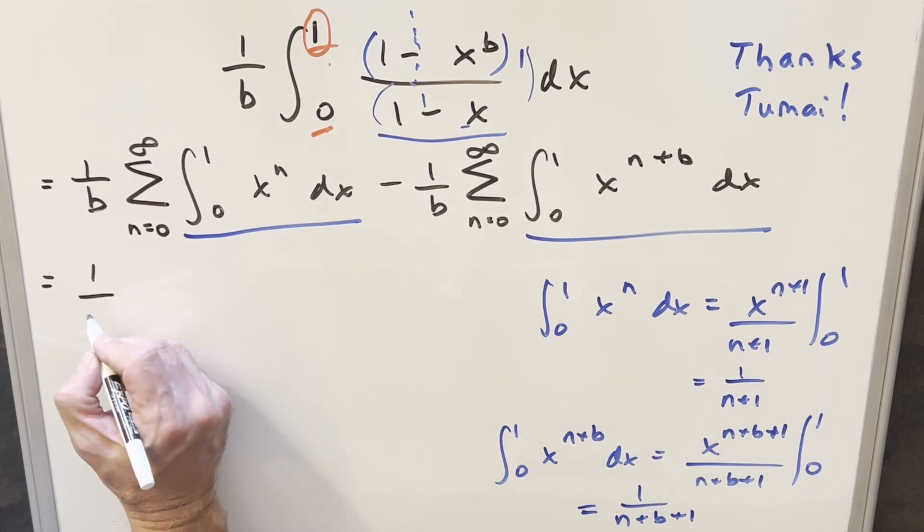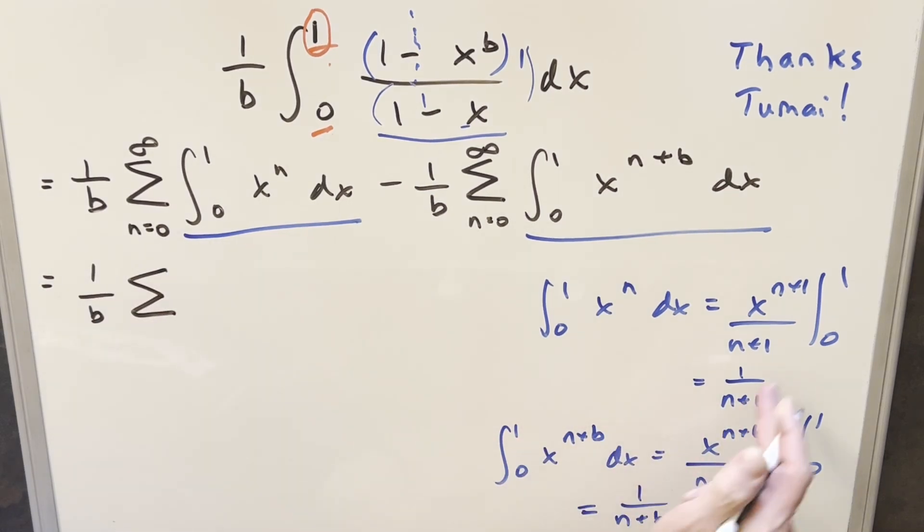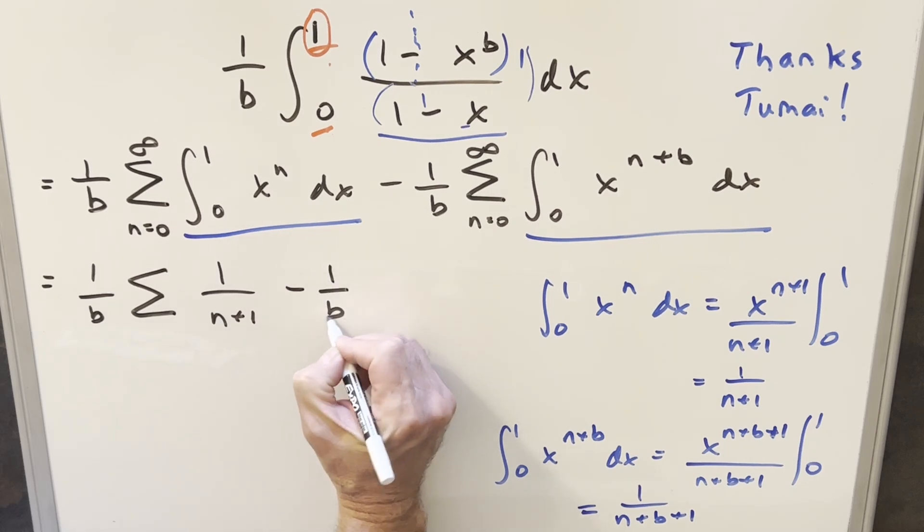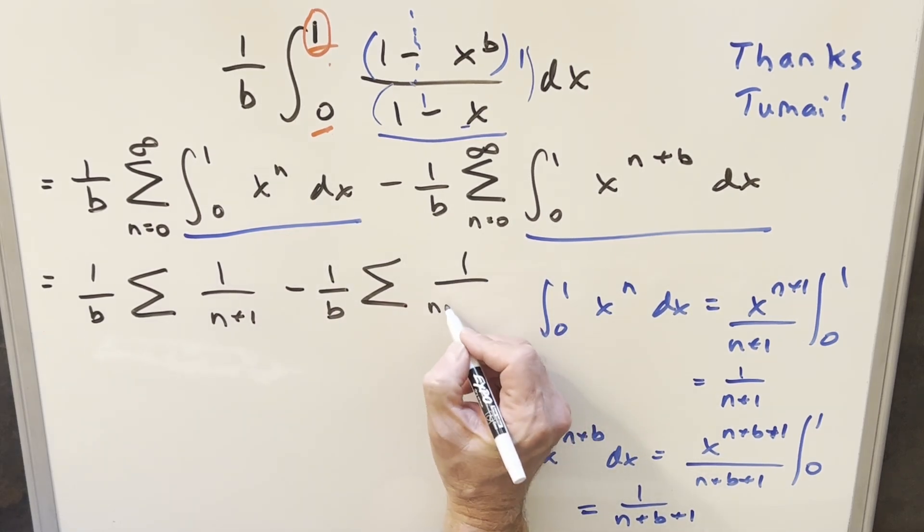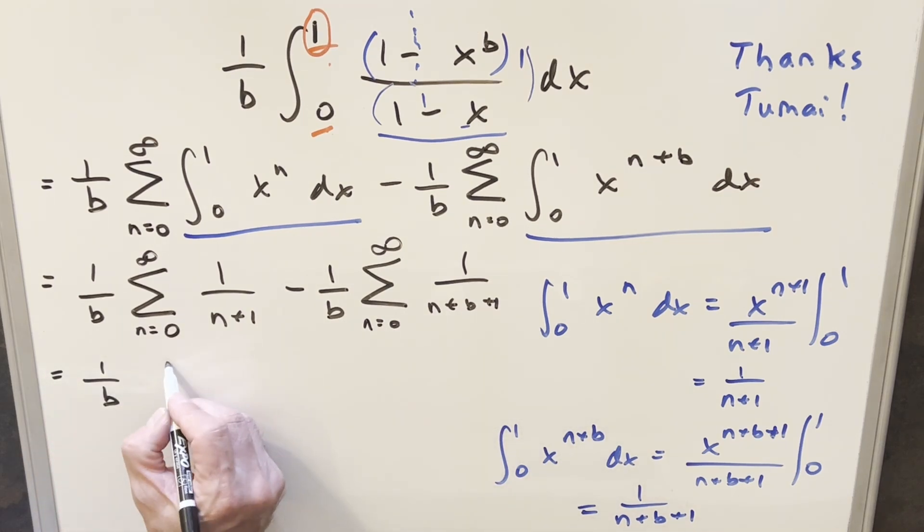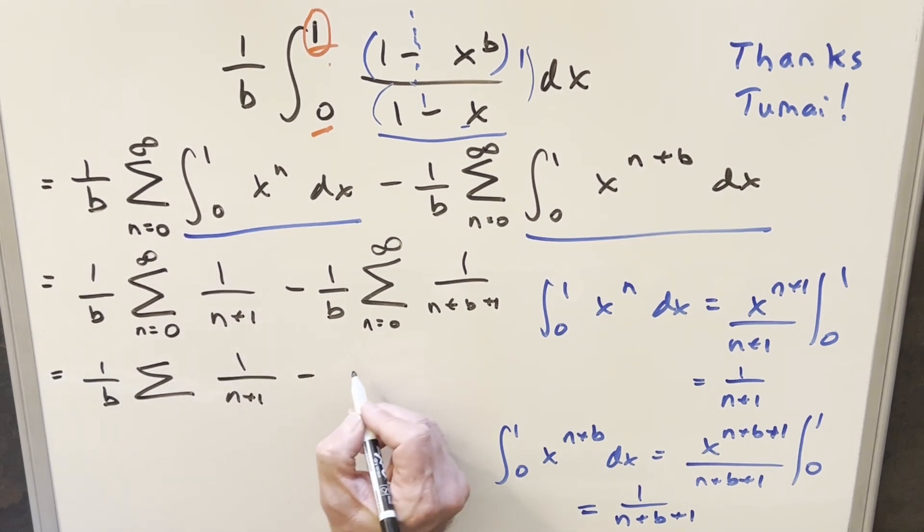So we'll plug what we found back into our sum. This one right here is going to be our 1 over n plus 1, and then for the second one, same thing, 1 over n plus b plus 1. And then from here, let's see if we can get a little simplification. Let's put these two together, factor out the 1 over b, bring it together into one sum now, and then we'll have 1 over n plus 1 minus 1 over n plus b plus 1.